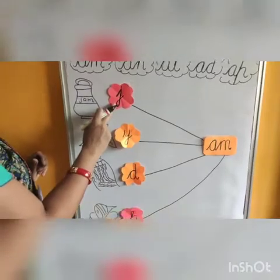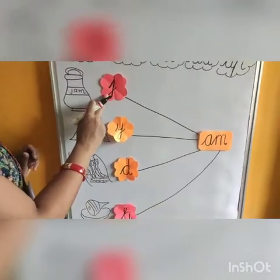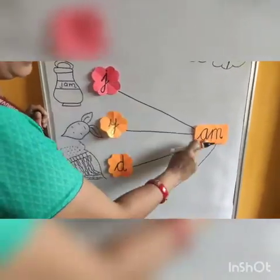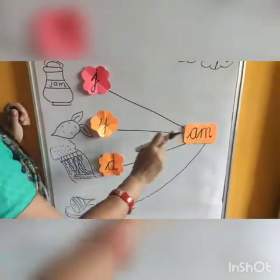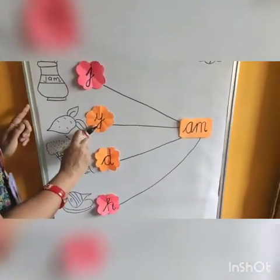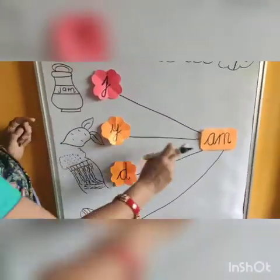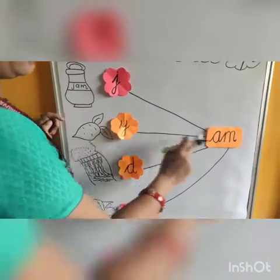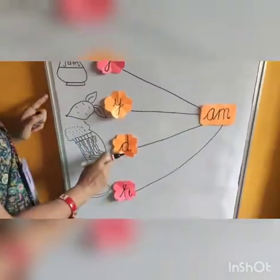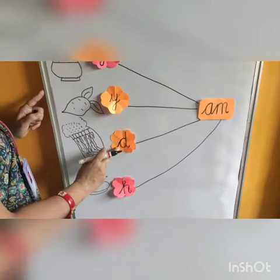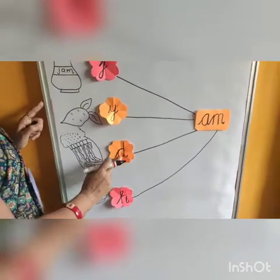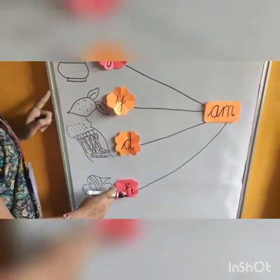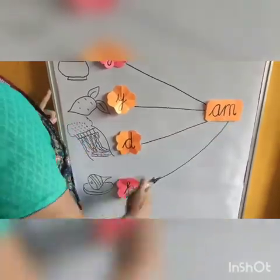Okay. Beginning sound is J, and ending sound is M. J-Am. Jam. Beginning sound is Y, and ending sound is M. Y-Am. Beginning sound is D. D. Am. Dam. H. Am. Ham.